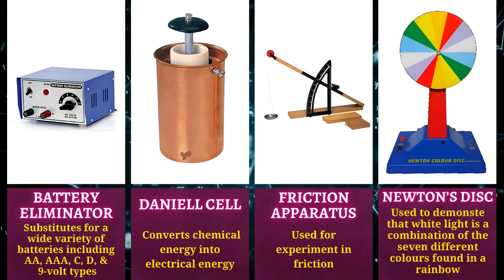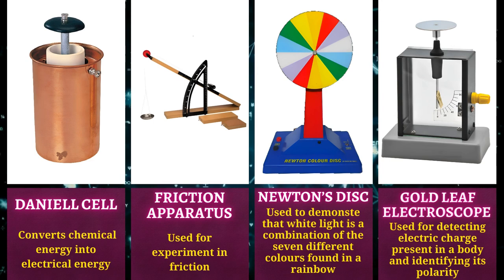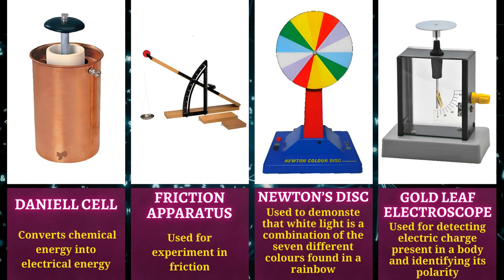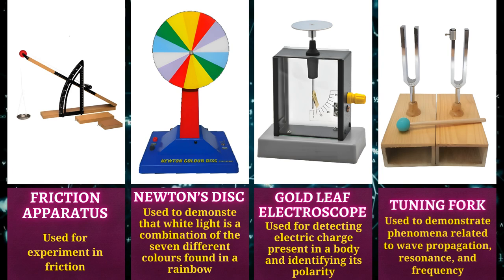Newton's disc is used to demonstrate white light is a combination of the seven different colors found in a rainbow. Gold leaf electroscope is used for detecting electric charge present in a body and identifying its polarity.